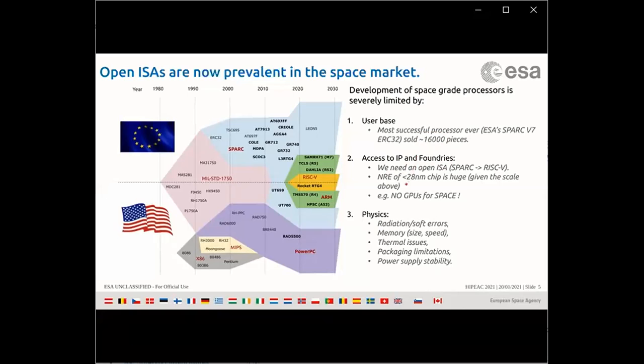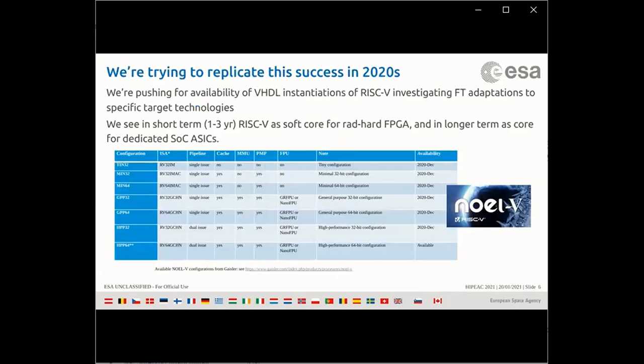We need access to IP foundries for system-on-chip, but non-recurrent engineering cost below 28 nanometers is becoming prohibitive for these numbers of devices. This is an example why there's no dedicated GPU for space — it's such a low-volume product that it cannot survive in this type of environment. On top of that we have physics: radiation, thermal issues, packaging limitations, and stability of power supply — all unmatched with what you can have in ground applications.